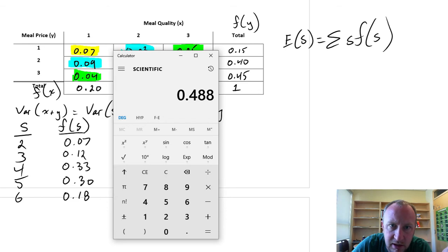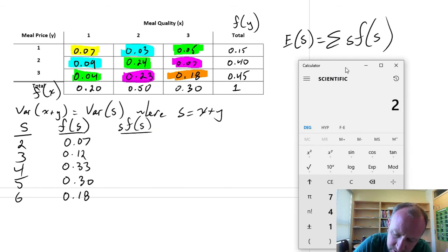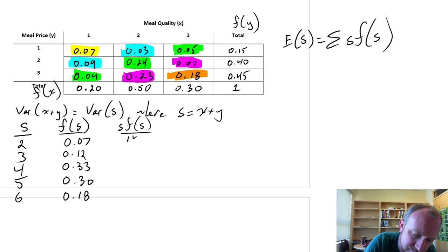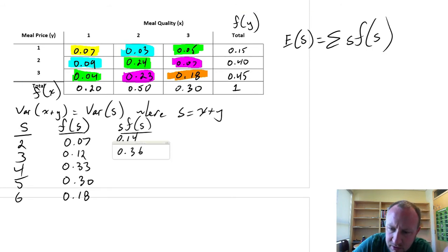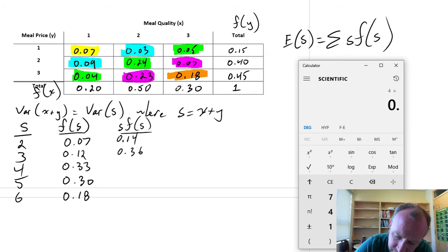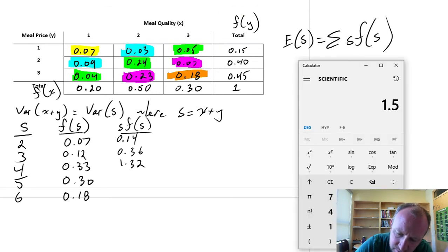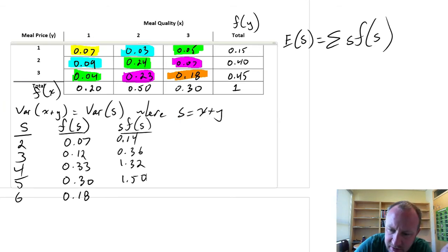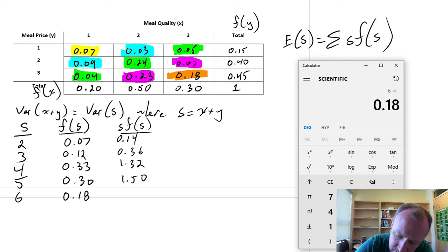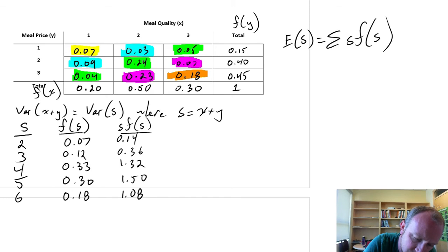I'll get my calculator here. So 2 times 0.07 is 0.14. 3 times 0.12 is 0.36. 4 times 0.33 is 1.32. 5 times 0.3 is 1.5. And 6 times 0.18 is 1.08. So there we have all of our weighted values, our values of s weighted by the relevant frequency. Now we just have to apply this summation sign, we just need to add all of those together.